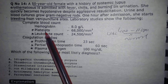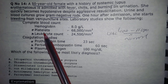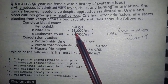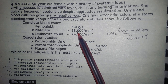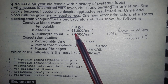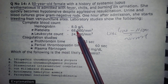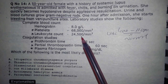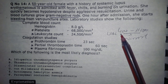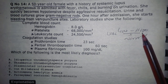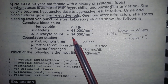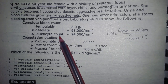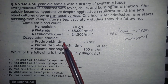Looking at the complete blood count: the platelet count is 68,000 — normal is 150,000 to 400,000 — so this is decreased, indicating thrombocytopenia. The leukocyte count is 24,500, which is above the normal range of 4,000 to 11,000, indicating leukocytosis.